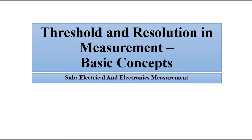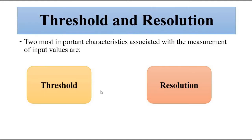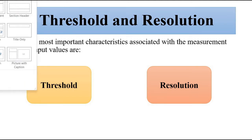Threshold and resolution are related to the input values which give us particular output results. Every performance characteristic associated with a measurement system is, one way or the other, related to the input-output relationship — be it sensitivity, drift, linearity, or whatever. So threshold and resolution are two important parameters when it comes to establishing the input-output relationship.